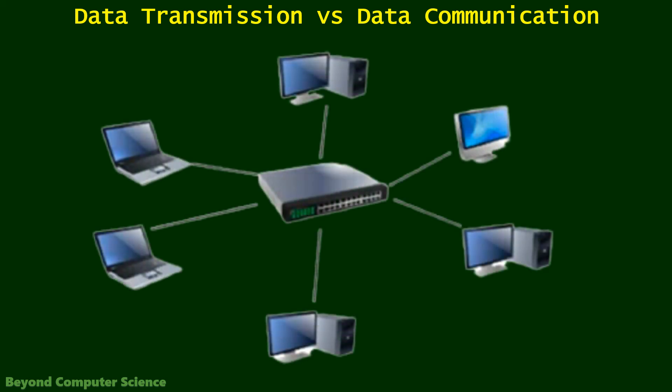For example, look at this picture: you have many computers attached to a switch, connected with each other using a wire. When a computer on the left side sends a file to the computer on the right side, the whole process is called data communication. But sending the file from the computer to the hub is data transmission, and sending it from the hub to the receiving computer is also data transmission.